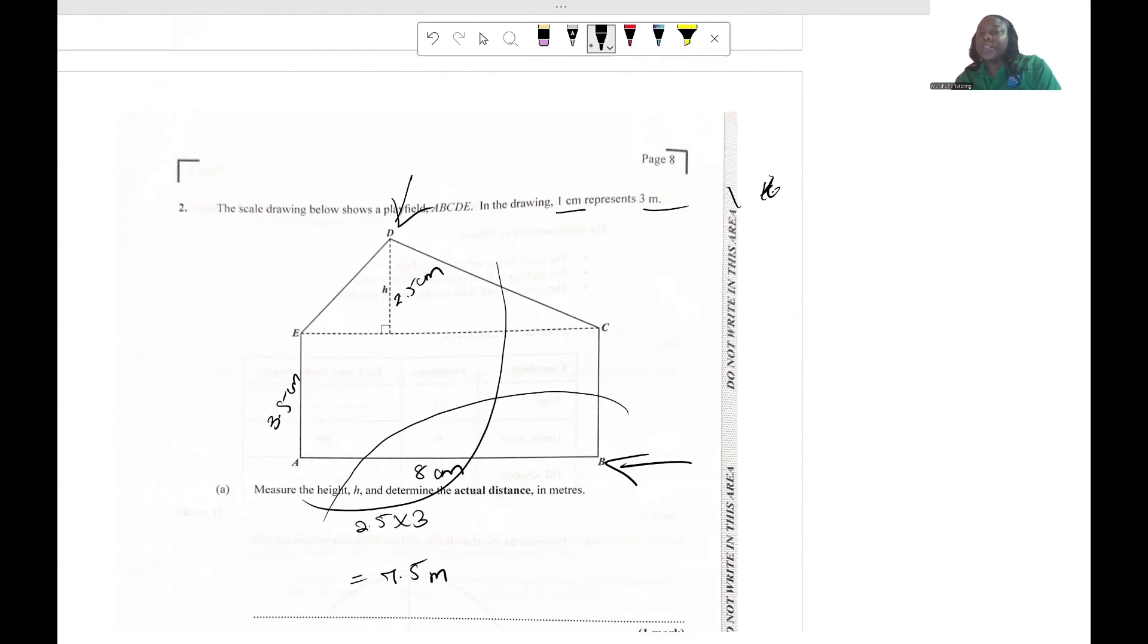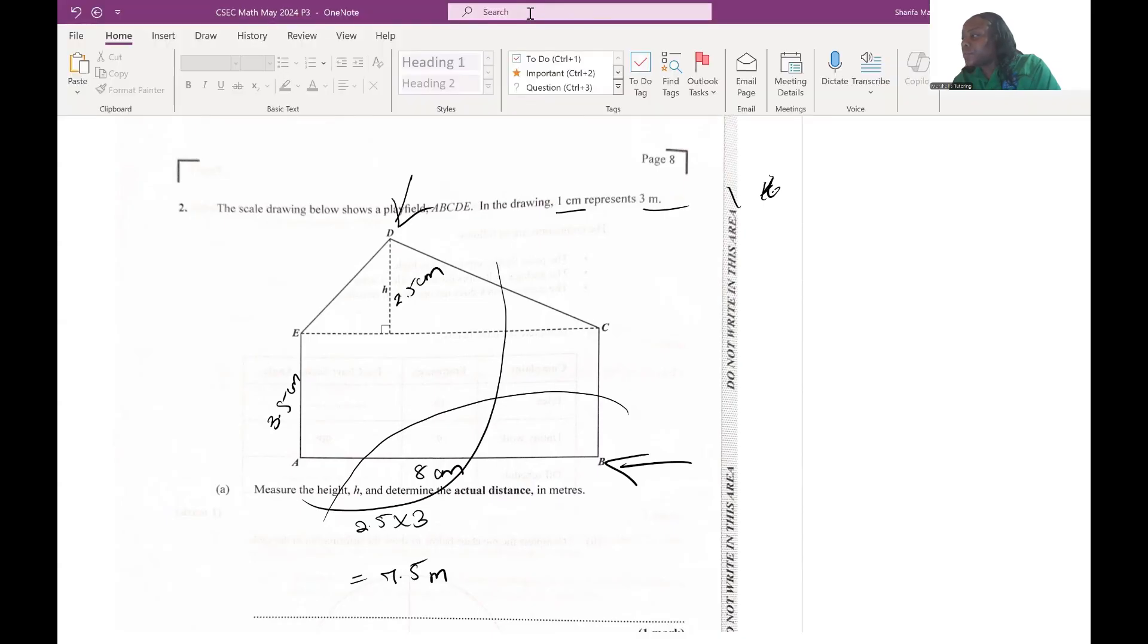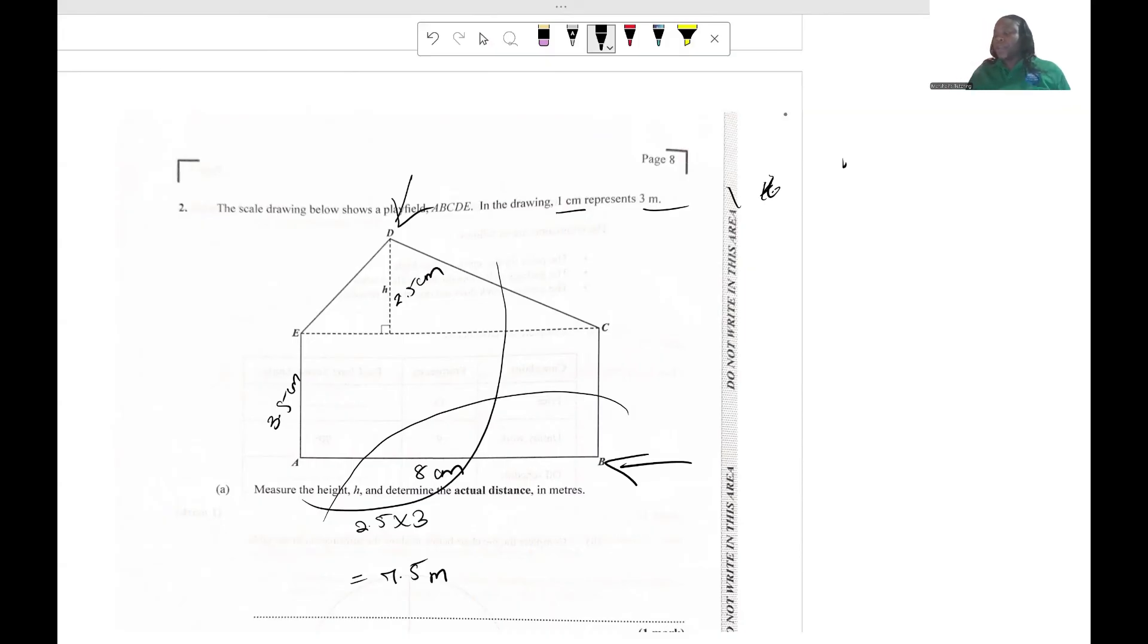Then you're going to take your ruler and draw a straight line that's going to go through where the two arcs would have bisected. It's also going to pass through point C. You're going to label that point where it would have intersected P. So we have line CP.